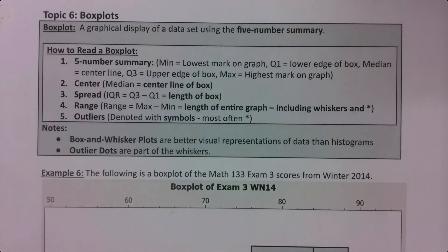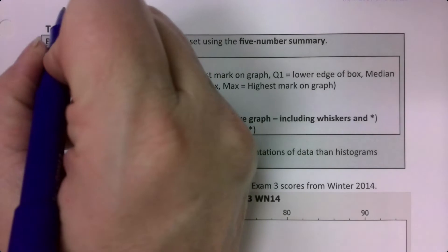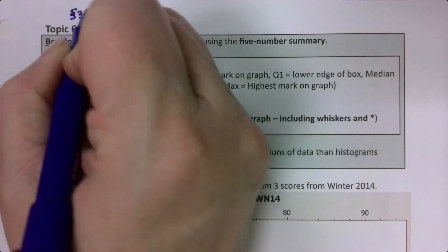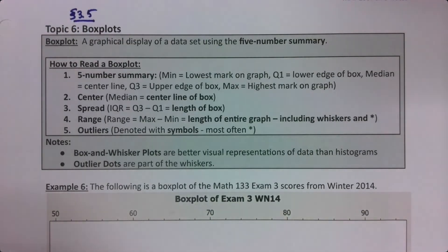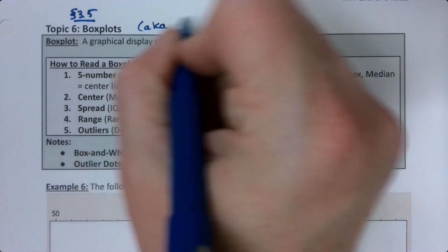Box and whisker plots are so useful for showing the picture of what quartiles and percentiles look like that I have them earlier. So this is technically section 3.5, box plots, also known as box and whisker plots.